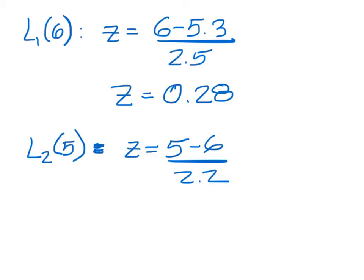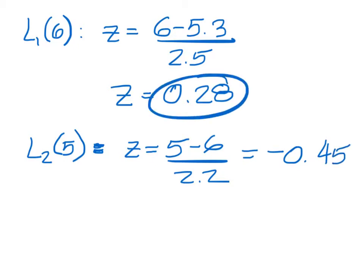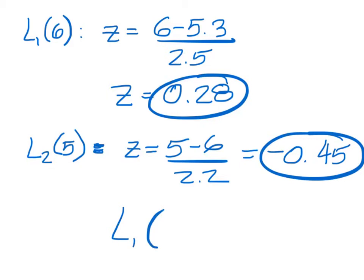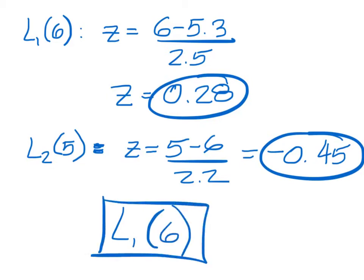For List 2, item 5, the z-score is going to be 5 minus 6, divided by 2.2, which equals negative 0.45. Now compare these two numbers — which one is highest? List 1, item 6 would have the better performance over List 2, item 5.